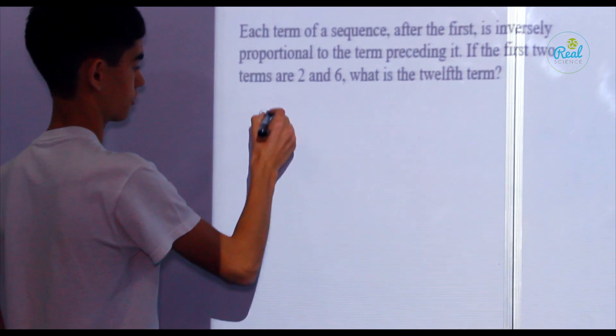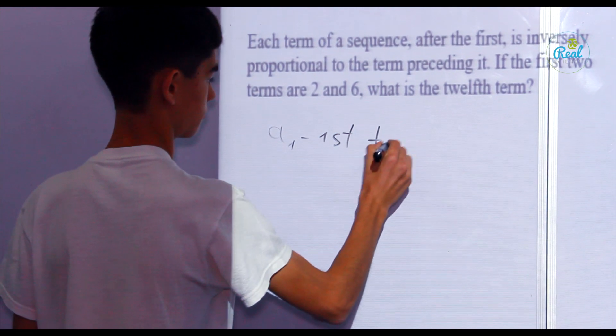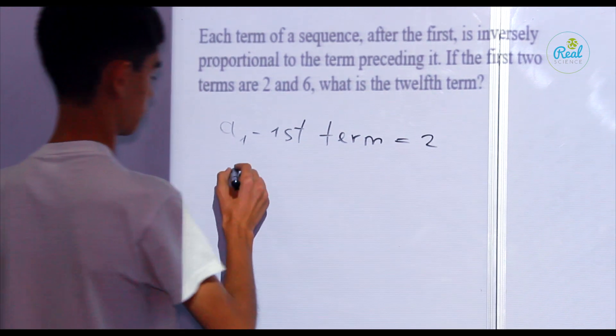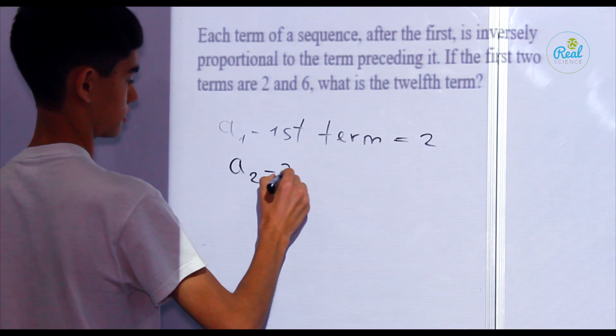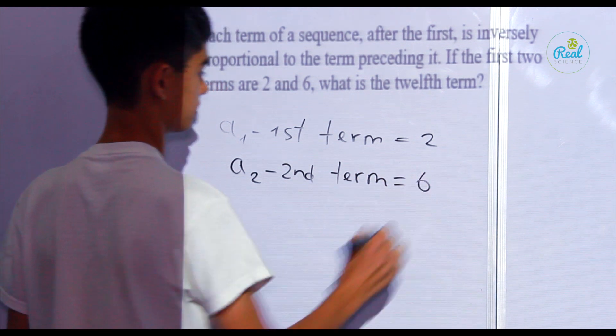We know that, for example, a1 is the first term, that is equal to 2. a2 is the second term, that is equal to 6.